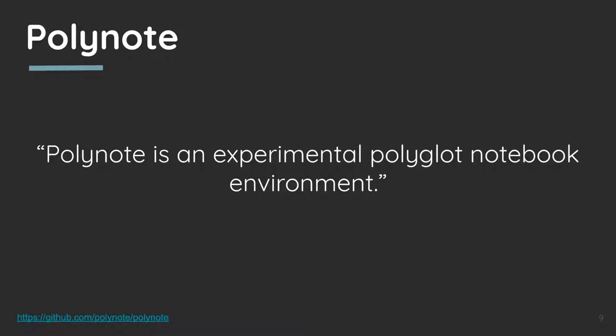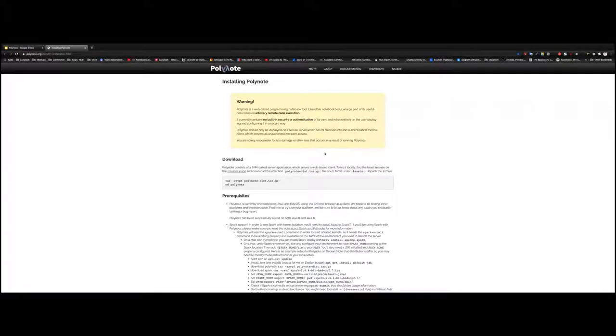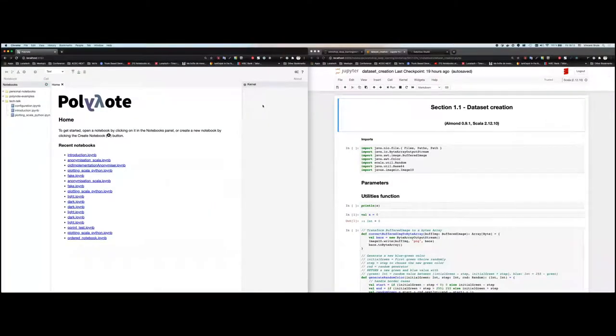Now that we've seen what a notebook is, we'll go into more detail with Polynotes, which is the subject for today. Polynotes has different features. The first is that it's made for Scala, so you'll have a lot more support compared to Jupyter. It's also polyglot, meaning you can use Python, Scala, and other languages in the same notebook. I'll show you the different interfaces — on the left is Polynotes and on the right is Jupyter, just to show the structure that exists.